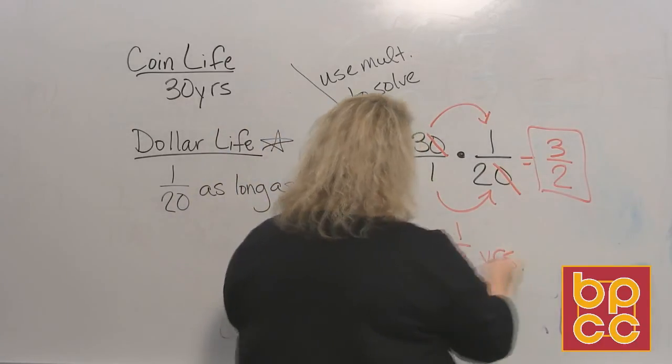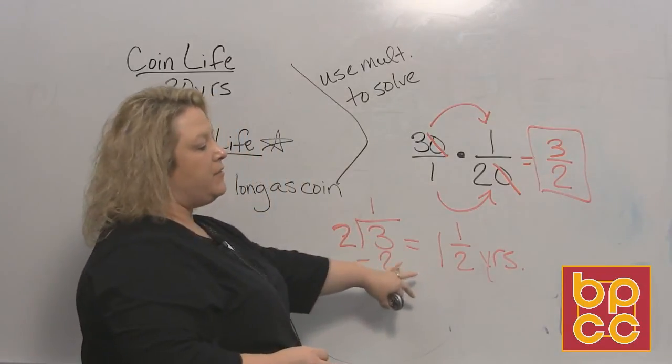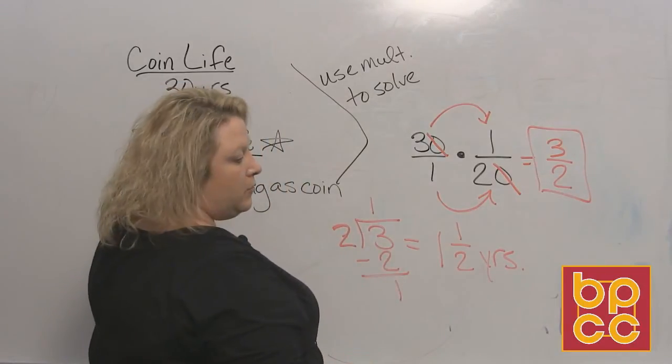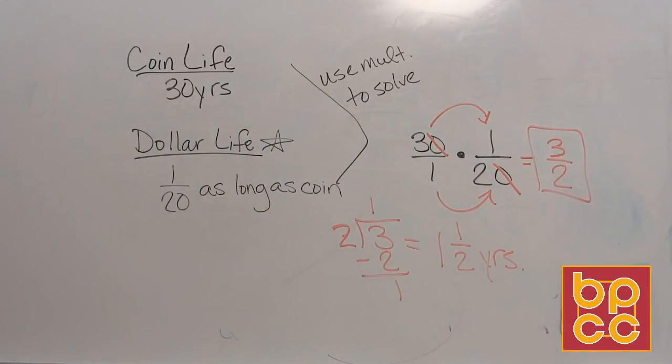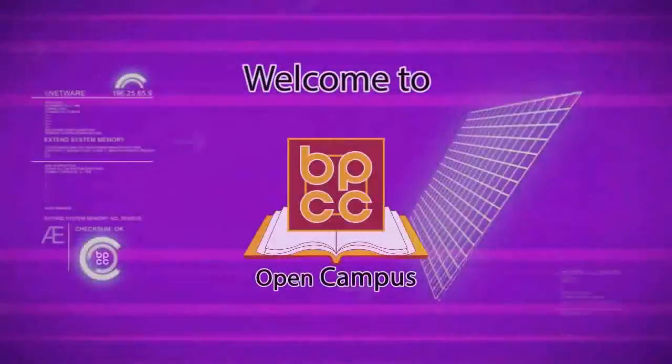A dollar bill on average stays in circulation for one and one-half years, versus a coin which lasts 30 years. We're now done with the main module on fractions, covering mixed numbers and whole numbers. Our next set of modules will cover decimals — place value, adding, subtracting, multiplying, dividing, word problems, and order of operations. Everything you can do with a whole number or a fraction, you can also do with a decimal. Thank you.